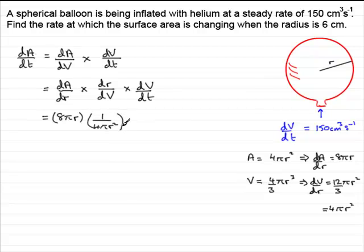So I've got dr dV. Now times dV by dt, which is 150. So times 150. So you can see, hopefully, that this is very quick and easy. And if you tidy this up, what you get is 300 over r.